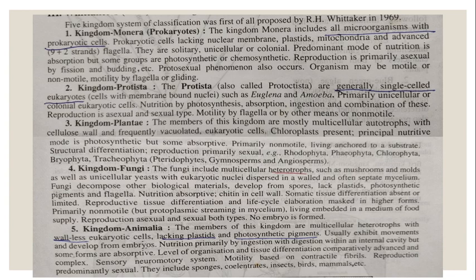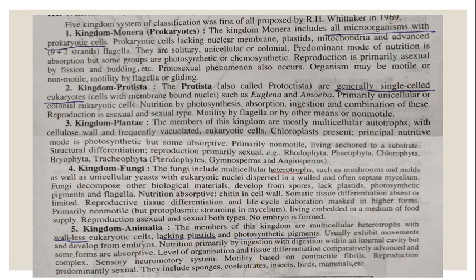Now let us come to the five kingdom classification. It was proposed by R.H. Whittaker. Whittaker gave the five kingdom classification, and in his classification, like Copeland's, Monera, Protesta, Plantae, and Animalia are there. But he included Fungi as a separate kingdom, separating it from all other four kingdoms. Monera includes the prokaryotes — mainly blue-green algae and bacteria.